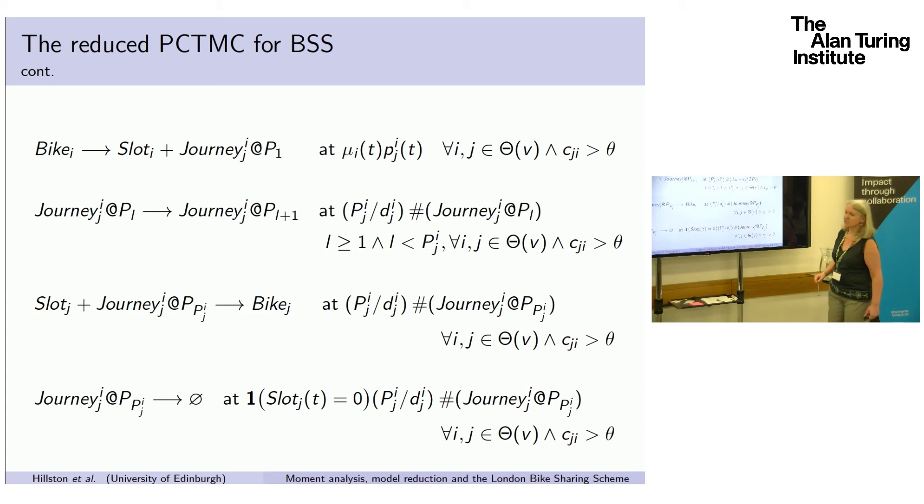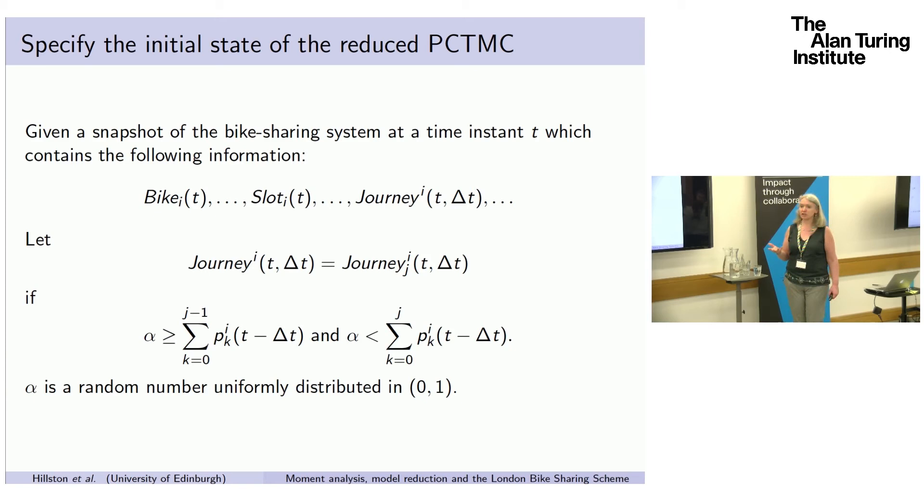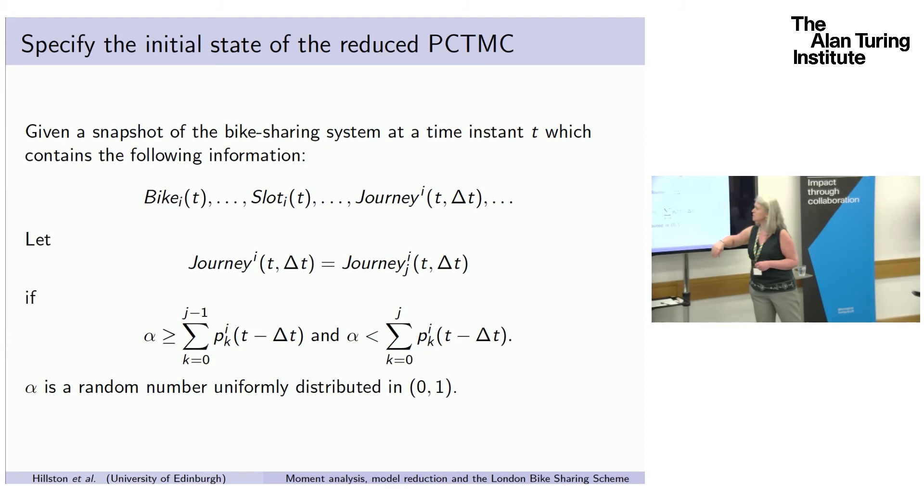Then all that remains is to actually set the initial state. We have access to the state of the system at the time when we start. So for the number of bikes and slots, that's straightforward. But we also then have some journeys and we don't know where the journeys are really going in the real system. So we don't know what phase they're at. So we select a journey to be between a particular pair of stations that are within our significant set. And we then use a random number to choose what phase of the journey that's actually on.